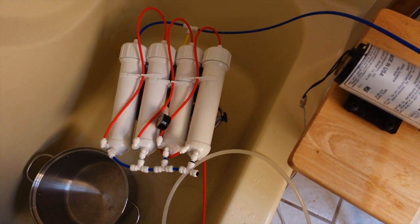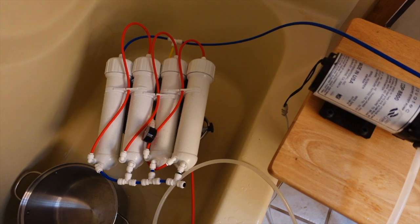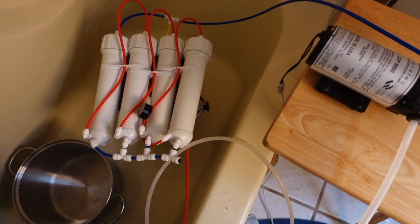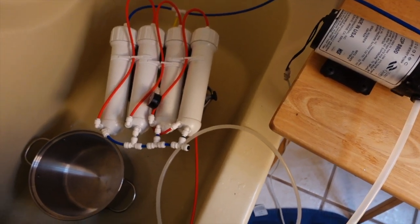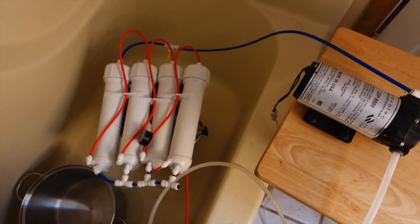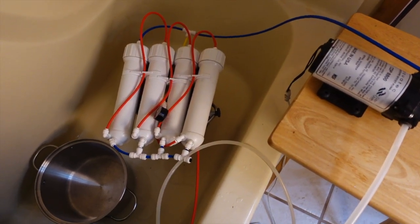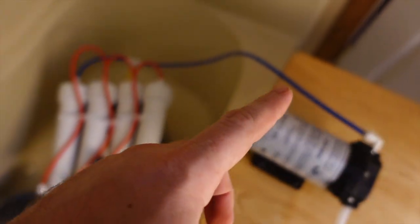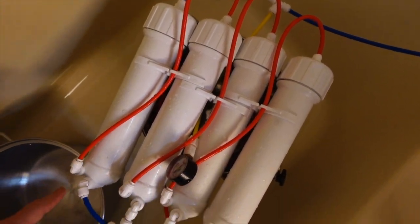We have four RO membranes. I think the highest GPD, so gallons per day, on these size are 150. Now these only have 100 gallon per day membranes, but when I buy them again they'll be 150 gallon per day membranes. The flow follows the blue line into the top of canister one and we get down to the bottom.